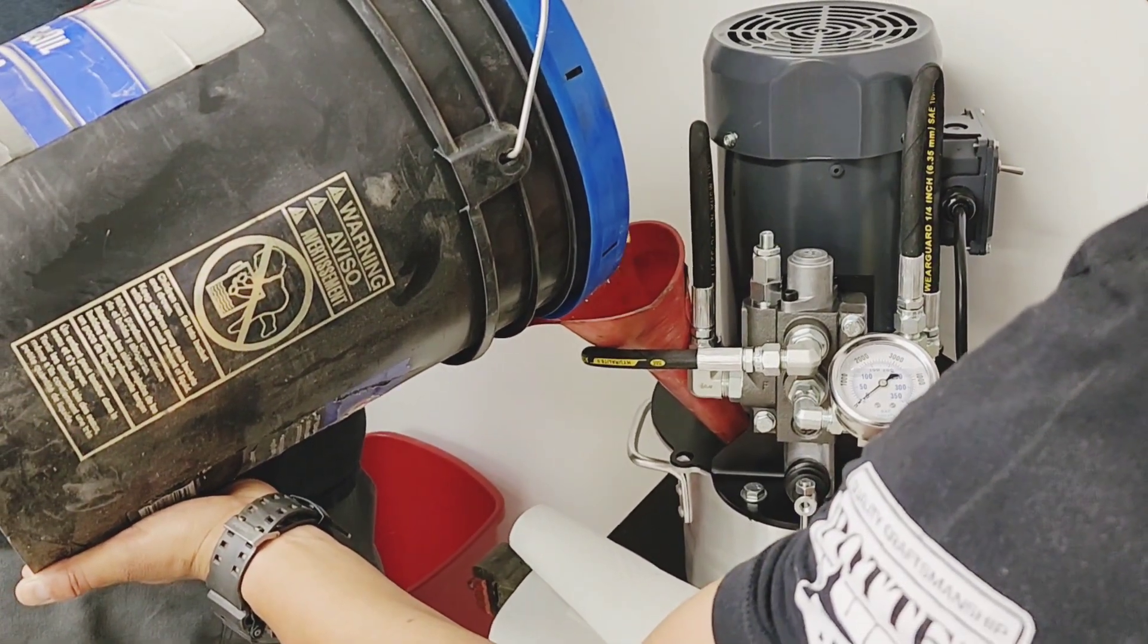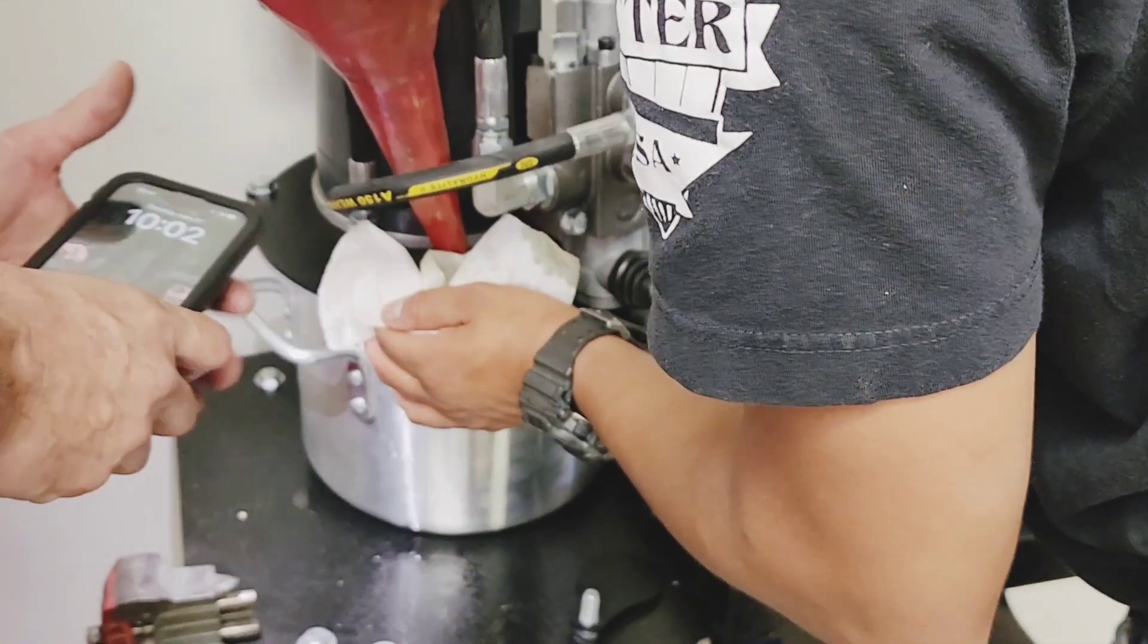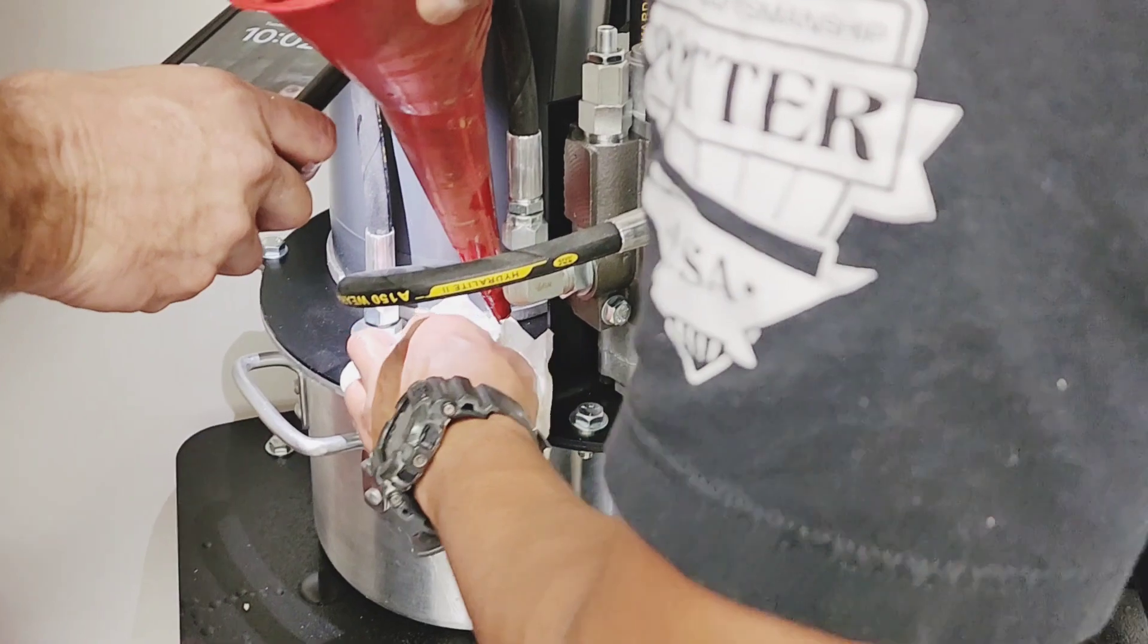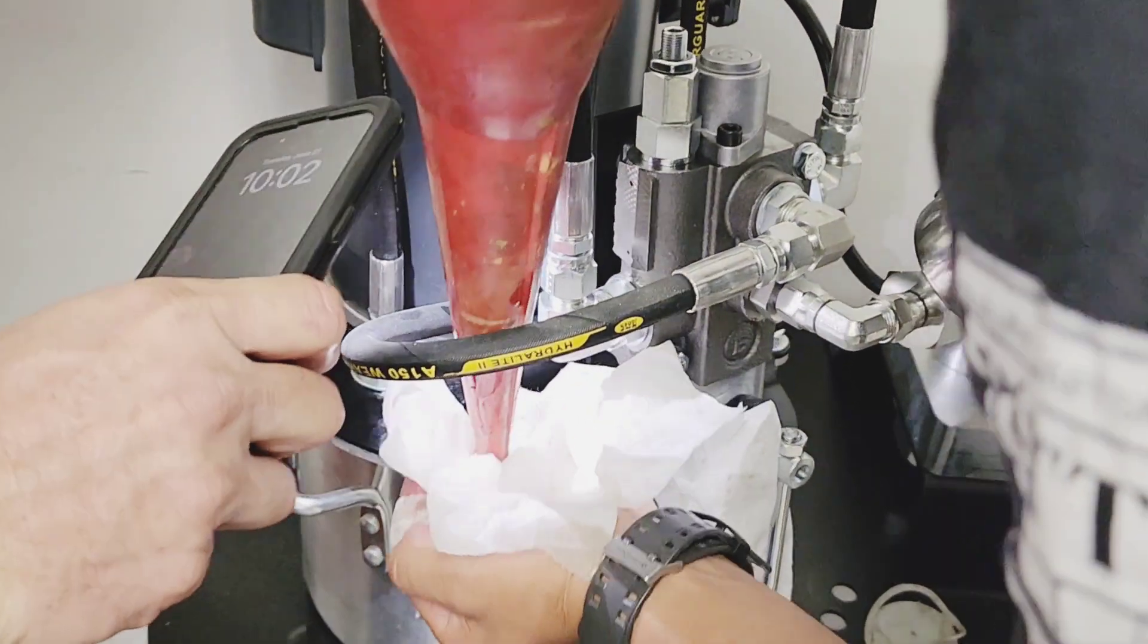You want this to be ISO 32 SAE 10 weight, and not hydraulic jack oil or brake fluid. Use a flashlight to look into the oil port and replace the paddle cover.